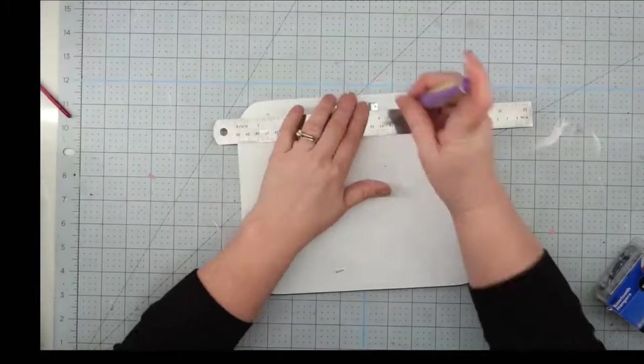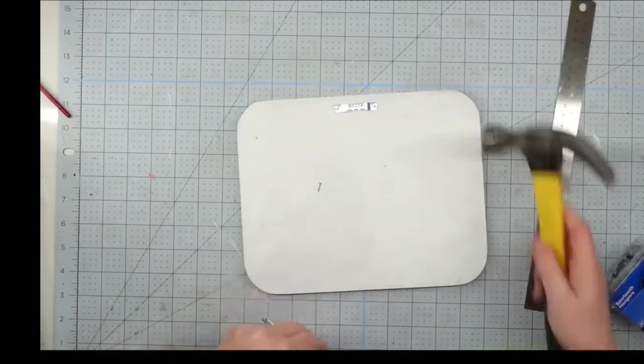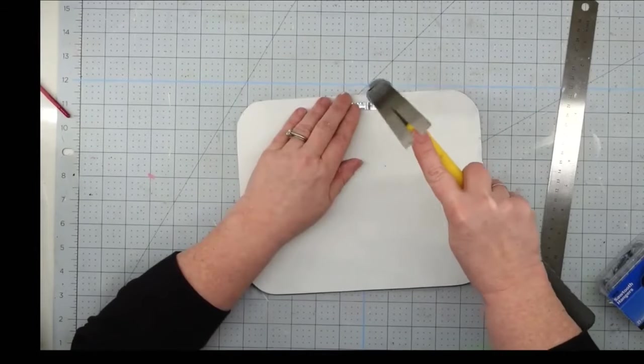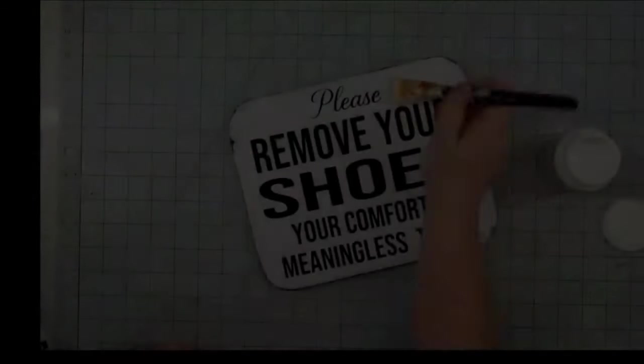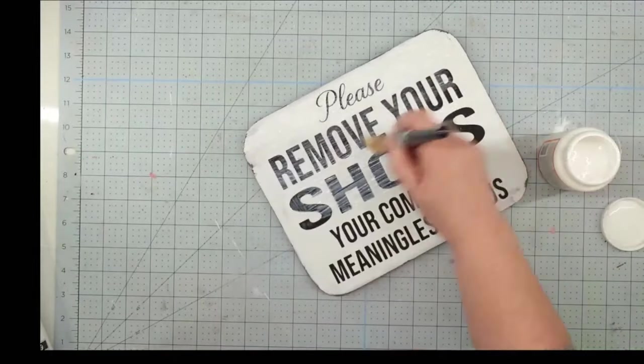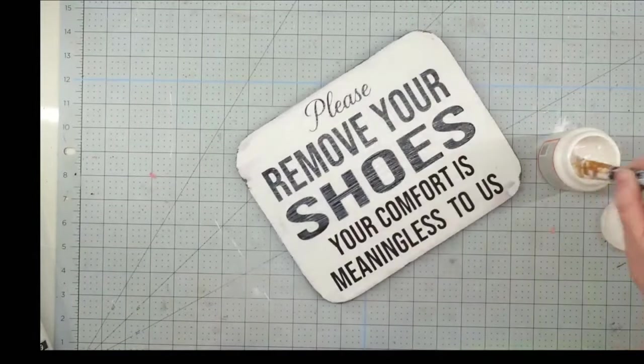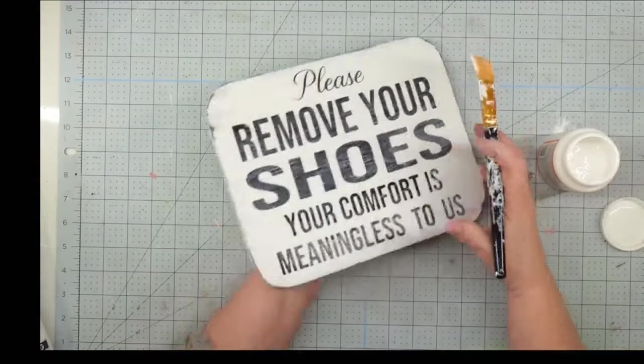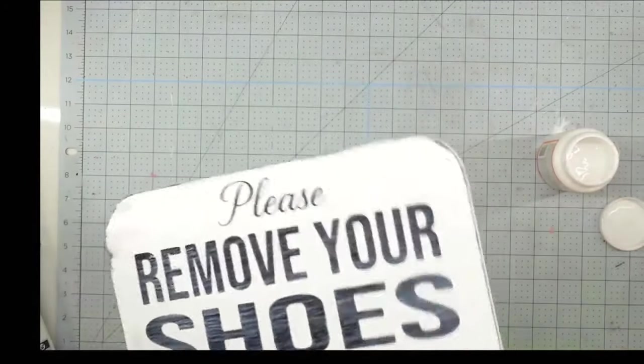To add a hanger to this, I'm just going to find the center of the back, and then I use a pokey tool to mark my holes and then a hammer to hammer it on. Since this is going to be hanging on a door, I wanted to seal it, so I'm just using some Mod Podge. I'll give it a good coat on the front, the back, and the sides and leave it to dry. With that, this project is finished.